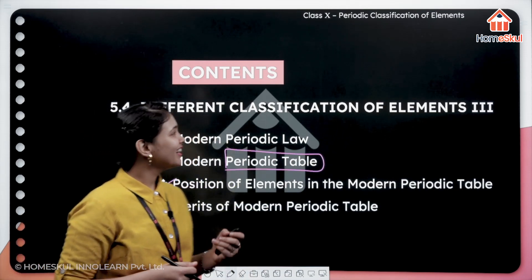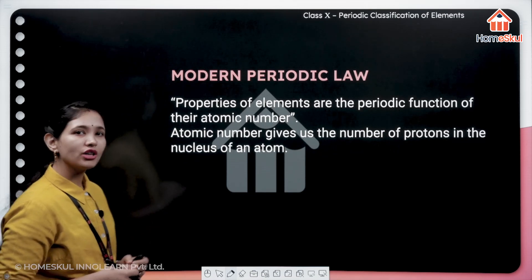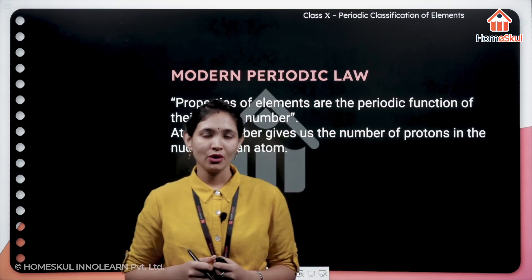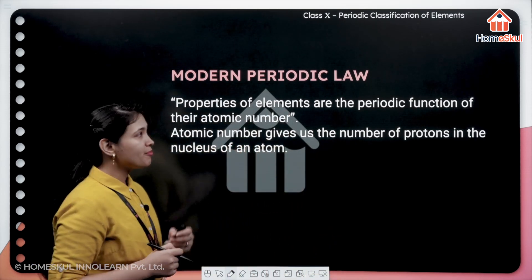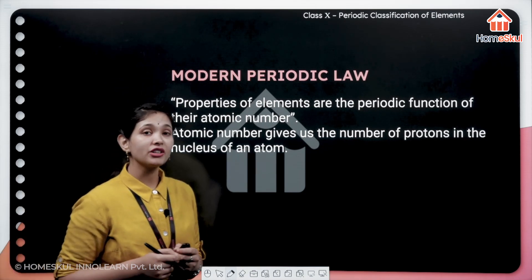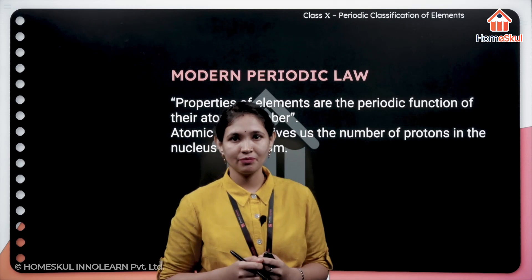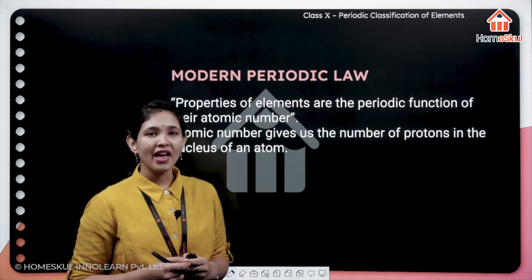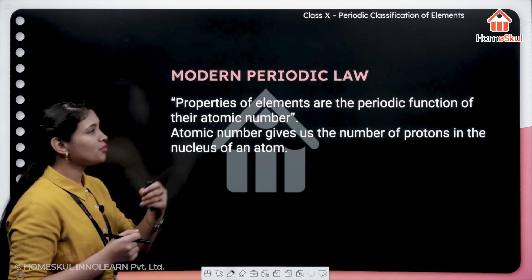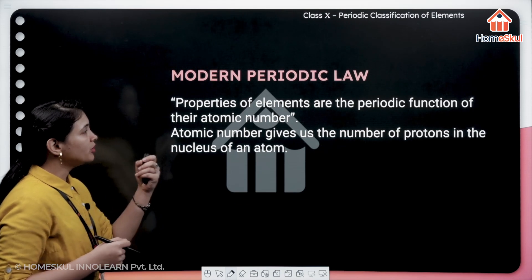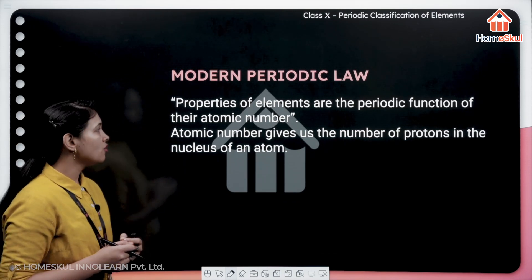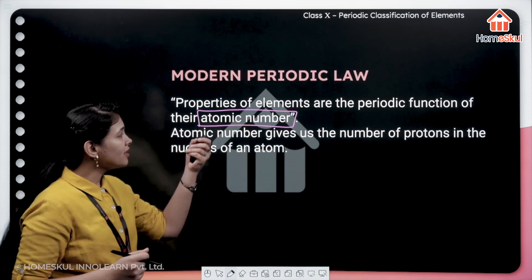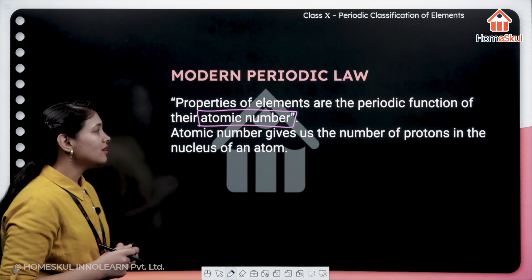Just see the modern periodic law. The law which we have studied earlier is Mendeleev's periodic law, and according to that law, the properties of elements are the periodic functions of atomic masses. But he corrected and modified his law and created the modern periodic law: properties of elements are the periodic functions of their atomic number, not masses. It's atomic number.